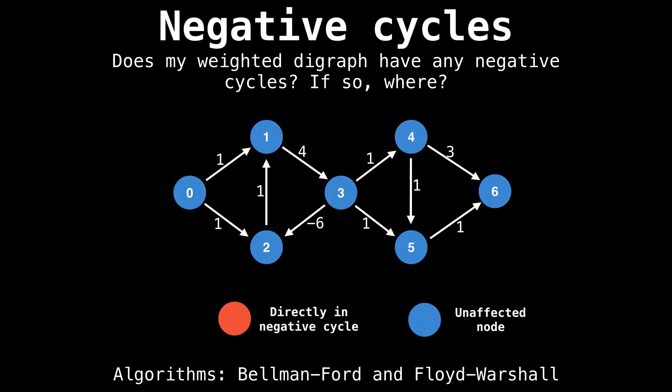Another common problem is detecting negative cycles in a directed graph. Sometimes we're dealing with graphs that have negative edge weights, and we need to know if a negative cycle exists, because if there does, it can throw everything off.